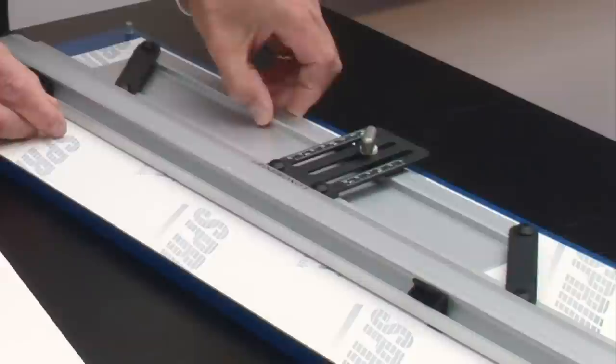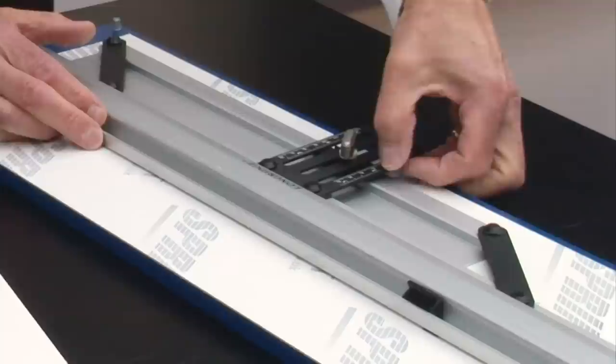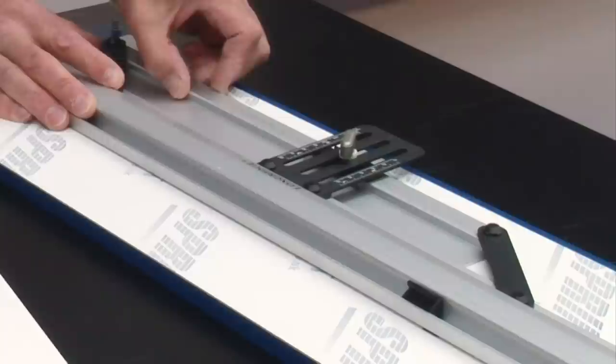The line on the top of the bar here we set against the measurement that we want. So if I'm going to set a two inch border I put the black line lines up with the particular measurement that I'm looking for.